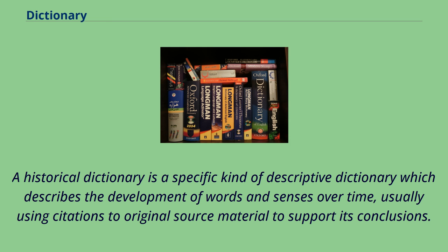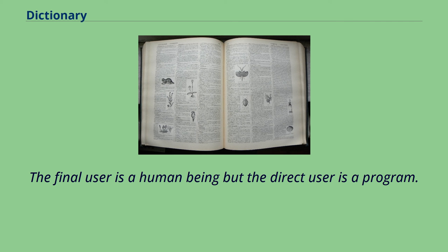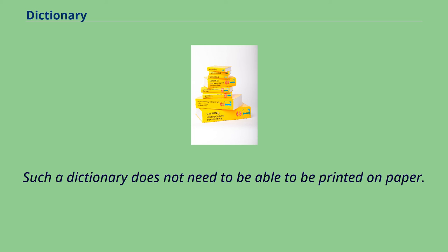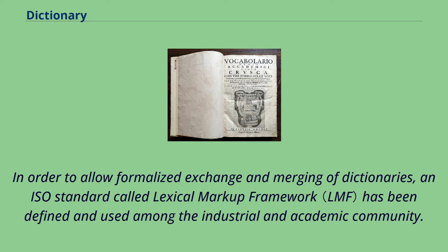A historical dictionary is a specific kind of descriptive dictionary which describes the development of words and senses over time, usually using citations to original source material to support its conclusions. In contrast to traditional dictionaries designed to be used by human beings, dictionaries for natural language processing are built to be used by computer programs. Such a dictionary does not need to be printed on paper; the structure of the content is not linear but has the form of a complex network. Because most of these dictionaries are used to control machine translations or cross-lingual information retrieval, the content is usually multilingual and of huge size. An ISO standard called Lexical Markup Framework has been defined and used among the industrial and academic community.